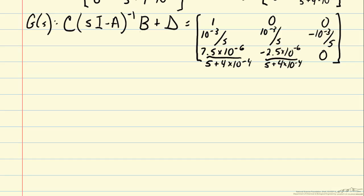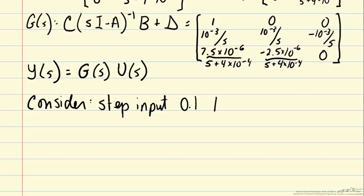Now that we have the transfer function G, we have a mathematical expression for the relationship between our measurements and our inputs. Let's consider the step input of 0.1 to w1 prime of t, to our disturbance variable that we have considered in previous videos.